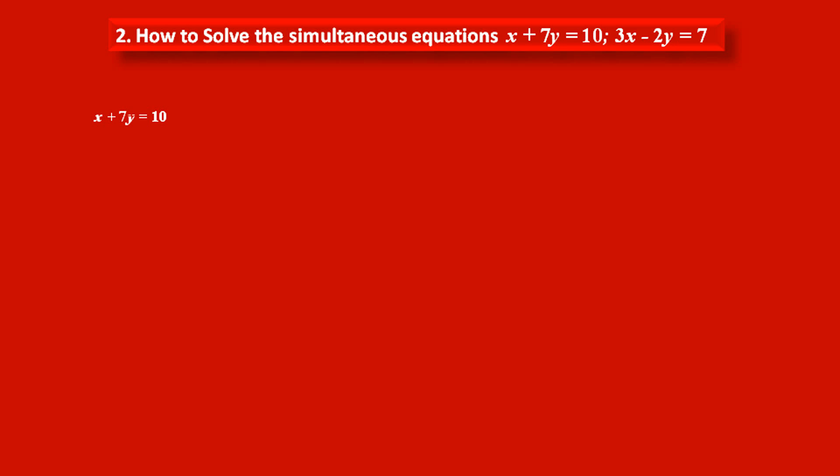Consider the given first equation x plus 7y equals 10 as statement number 1, and second equation 3x minus 2y equals 7 as statement number 2. Now, to solve these two equations, we have to eliminate one of the variables.